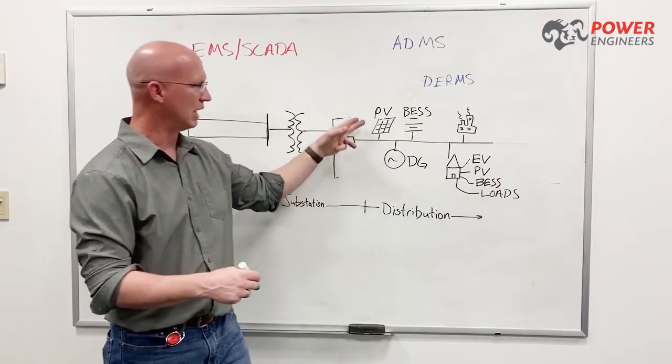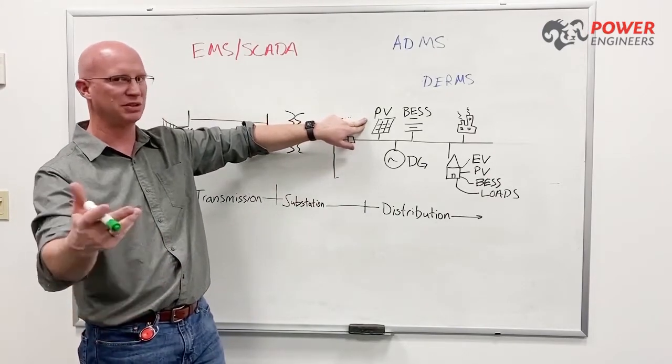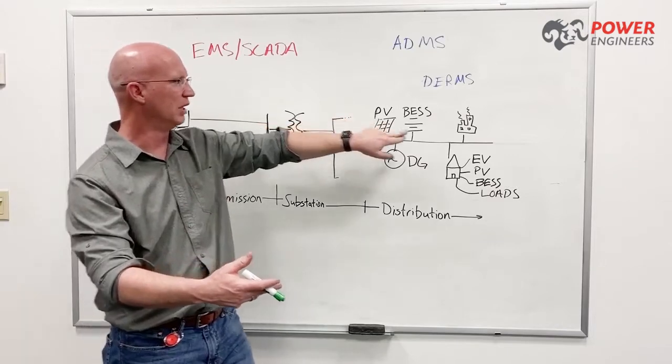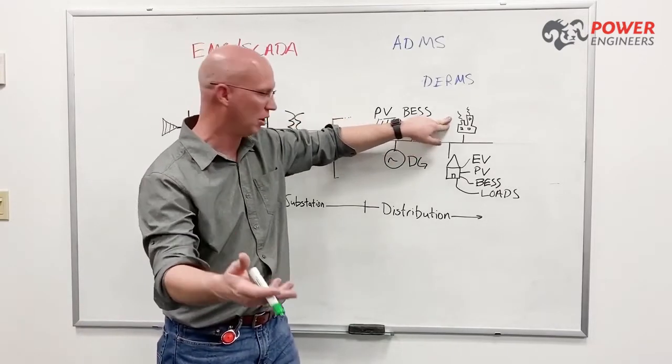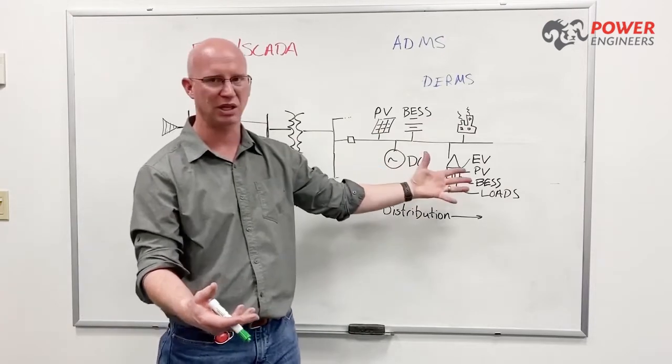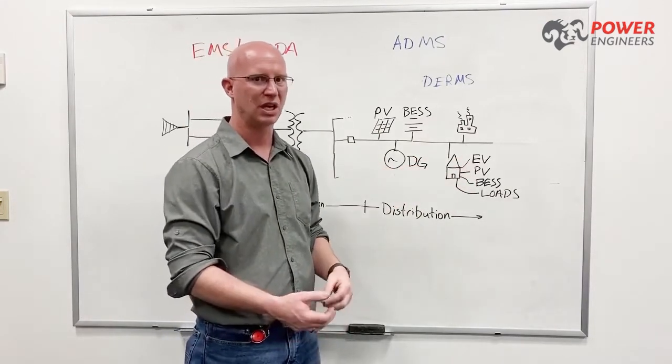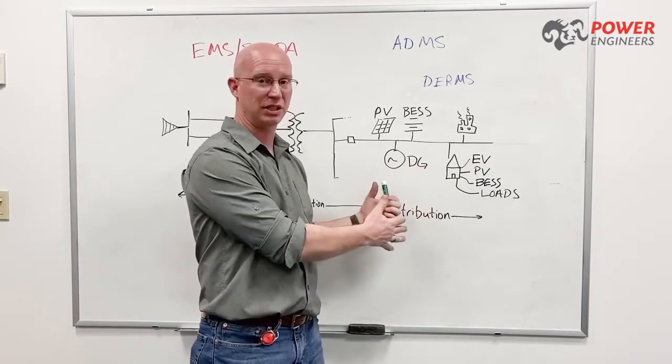That might look like some bulk PV that's connected to a distribution system, utility or privately owned, some industrial controllable loads. Some of those industrials might have some distributed generation as well as various energy resources including electric vehicles connected to our residential homes.